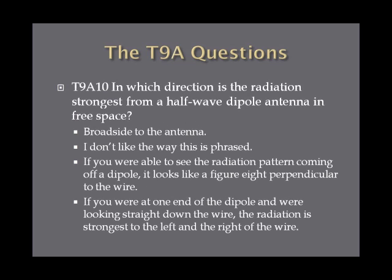In which direction is the radiation strongest from a half-wave dipole antenna in free space? The answer is broadside to the antenna. If you could see the radiation pattern, it looks like a figure-eight perpendicular to the wire, with the wire cutting the figure-eight in half at the middle. Looking straight down the wire from one end, the radiation is strongest to the right and left — broadside to the antenna.